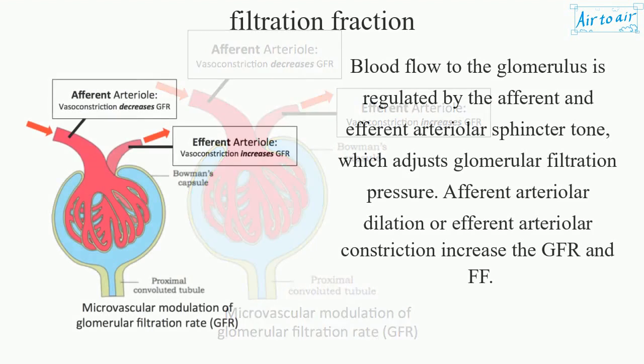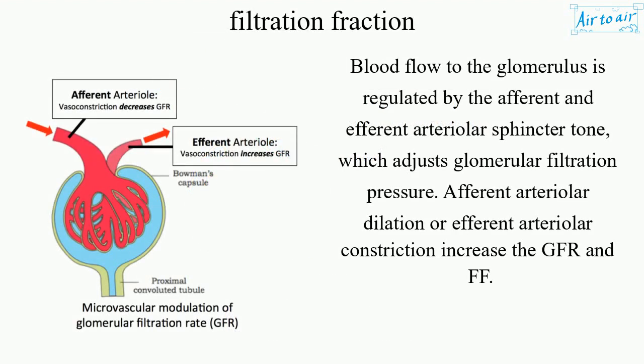Blood flow to the glomerulus is regulated by the afferent and efferent arteriolar sphincter tone, which adjusts glomerular filtration pressure. Afferent arteriolar dilation or efferent arteriolar constriction increase the GFR and FF.